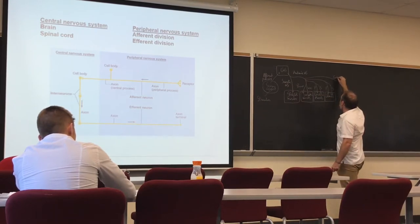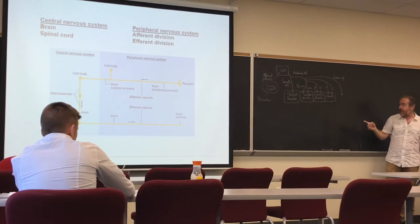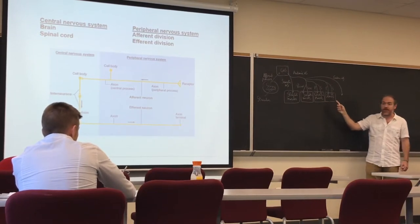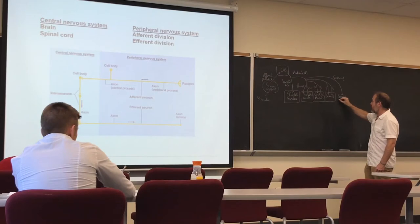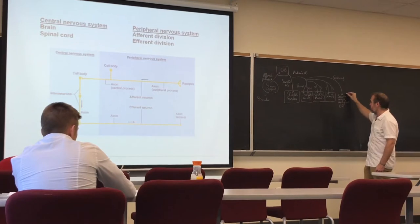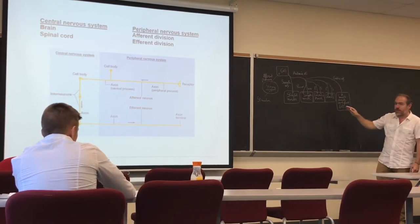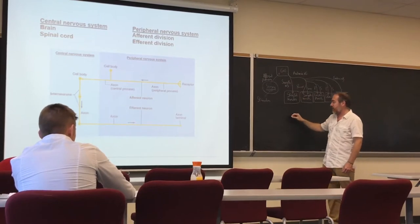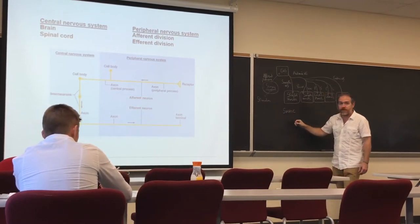The enteric nervous system is going to innervate smooth muscle and glands located in the gastrointestinal tract. So the efferent pathway has two main branches: somatic and autonomic.